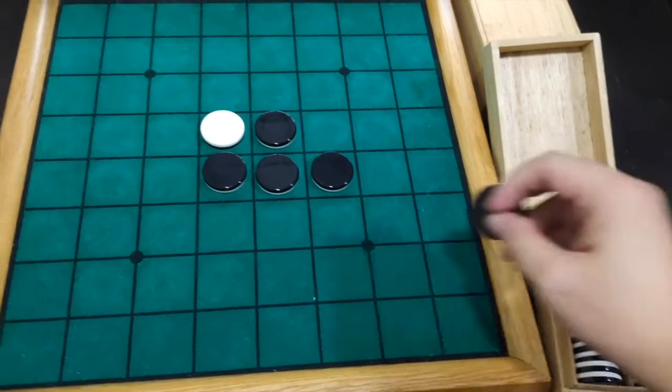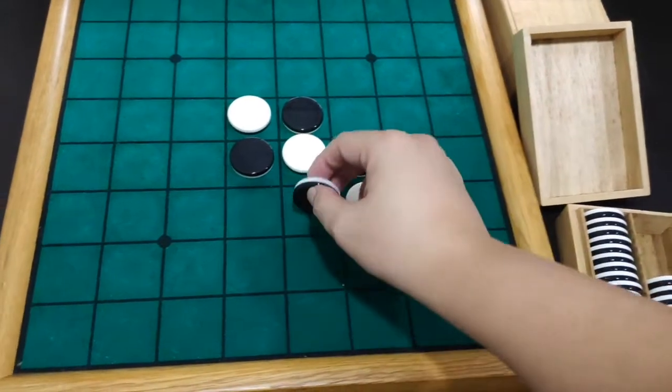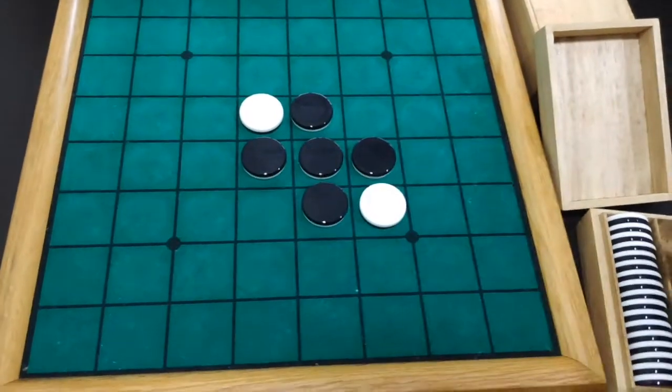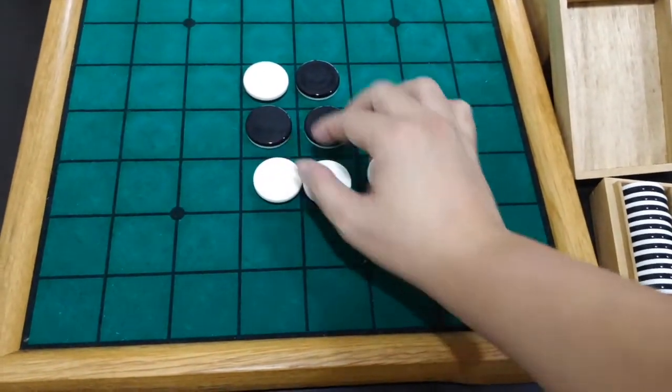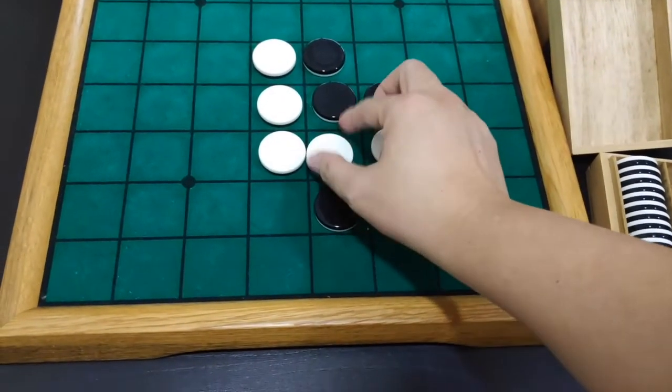So basically you have the typical diagonal opening to Heath. So you have this set up. And then basically Black jumps into Heath.